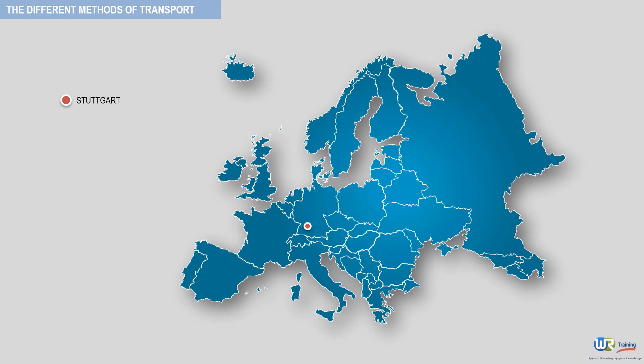This refinery can choose between two pipelines to carry its crude oil shipped via the Mediterranean. The first pipeline is the South European Pipeline, SEPL. This pipeline connects the city of Fos in the south of France to Strasbourg and then to Germany.